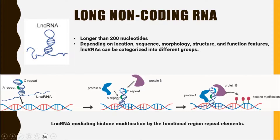Repeat A can recruit protein A, and repeat C is going to recruit the protein called protein B. When these two proteins attach themselves to long non-coding RNA, they can perform their function — as you can see in this picture, they are doing histone modifications.